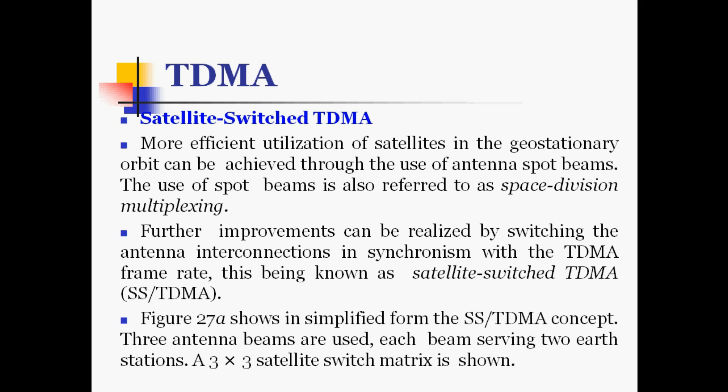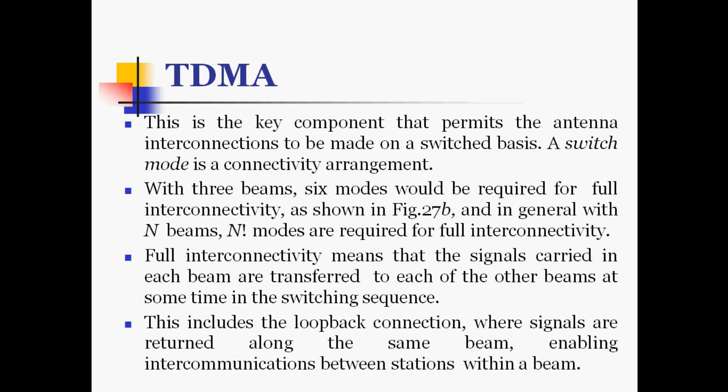The simplified SS-TDMA concept uses three antenna beams, each serving two earth stations, with a 3×3 satellite switch matrix. This is the key component that permits antenna interconnections to be made on a switched basis. The switch mode is a connectivity arrangement; with 3 beams, 6 modes are required for full interconnectivity. In general, with N beams, N factorial modes are required for full interconnectivity.